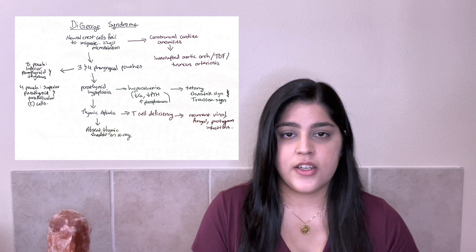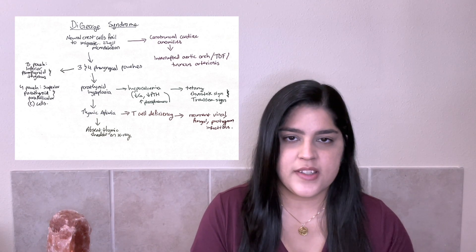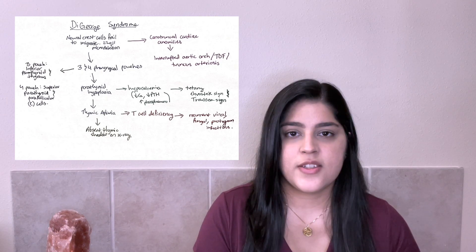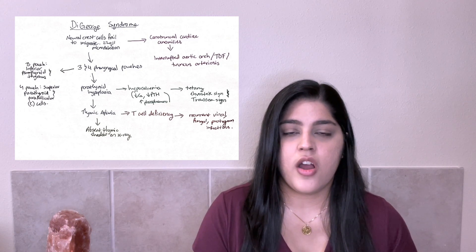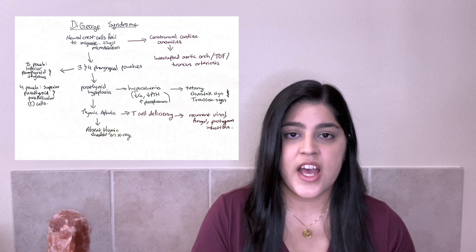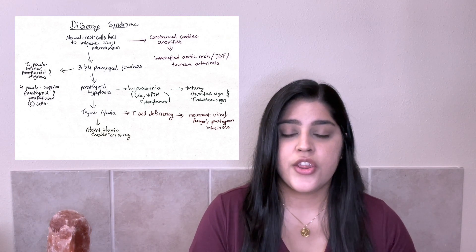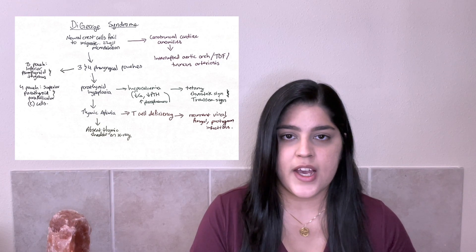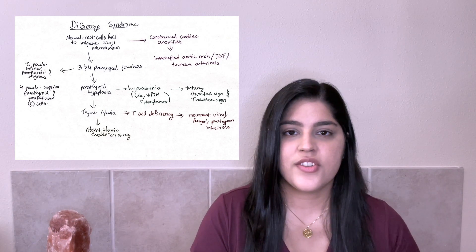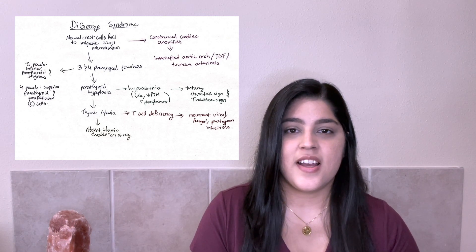One of the things we see because the neural crest cells fail to migrate is conotruncal cardiac abnormalities. Some examples are tetralogy of Fallot, interrupted aortic arch, and truncus arteriosus. Moving on further, the third and fourth pharyngeal pouches are often absent, and because they're absent, we have parathyroid hypoplasia as well as thymic aplasia. With parathyroid hypoplasia, the first things we'll see in labs are low calcium, low PTH, and an increase in phosphorus. The clinical symptoms you'd see are Chvostek's sign as well as Trousseau's sign.